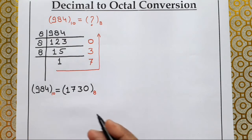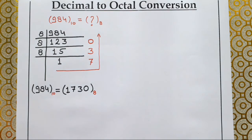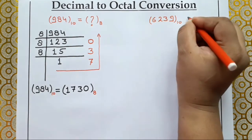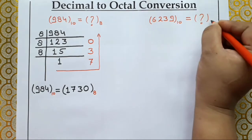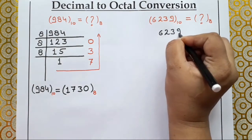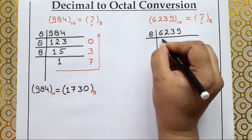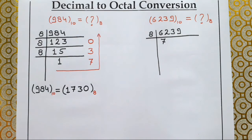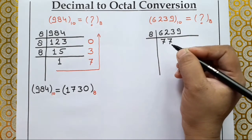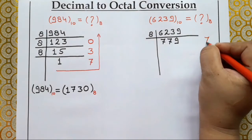Now let's take another decimal number and convert it to octal. Let's say I have taken the number 6239. This is a decimal number and we need to find out its equivalent octal number. Let's start: dividing 6239 by 8 — 8×7=56, 8×7=56 — the remainder left is 7.